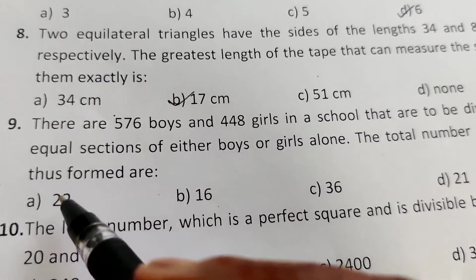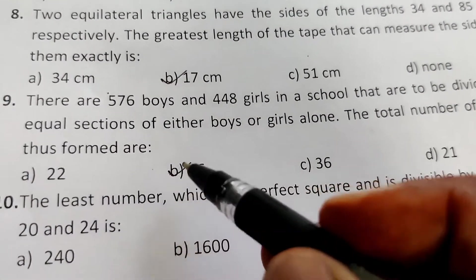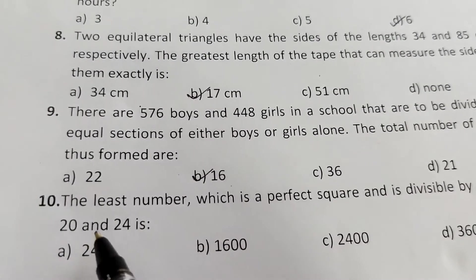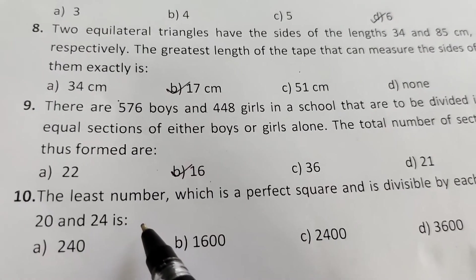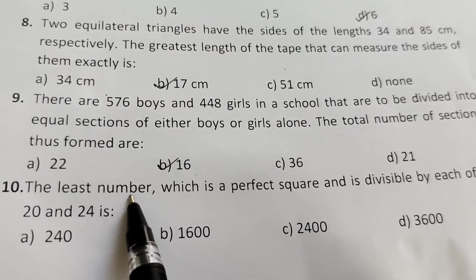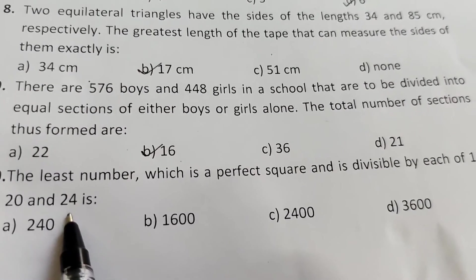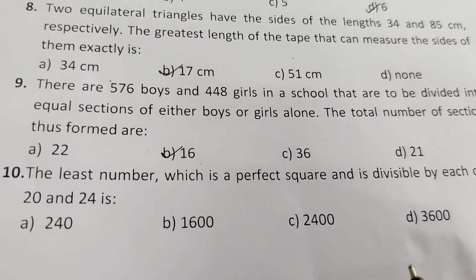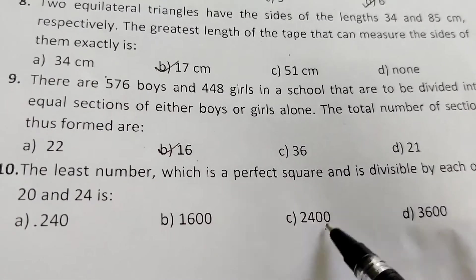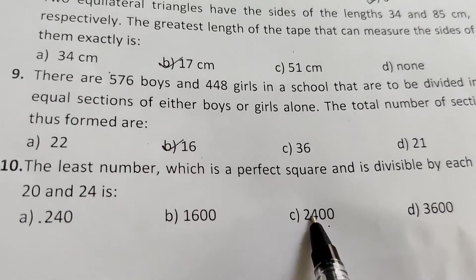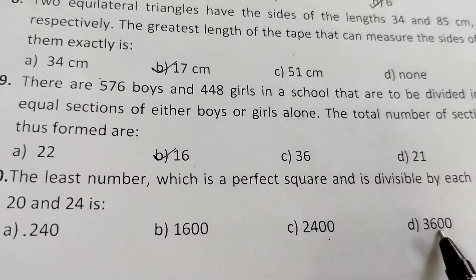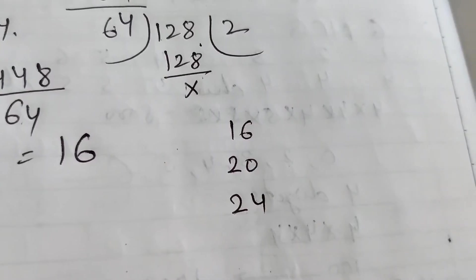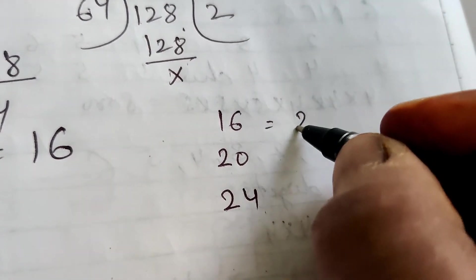Question 10: The least number which is a perfect square and is divisible by each of 16, 20, and 24. First we find the LCM of 16, 20, and 24. 240 and 2400 are not perfect squares, so options are 1600 or 3600. 16 = 2⁴, 20 = 2² × 5.